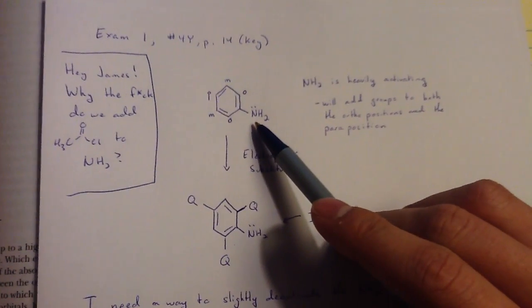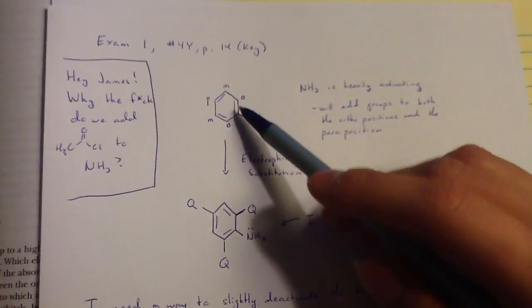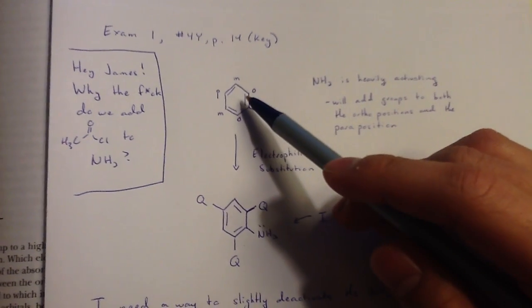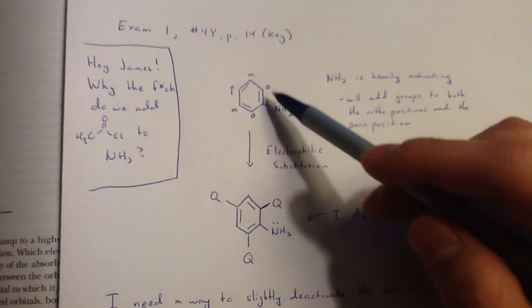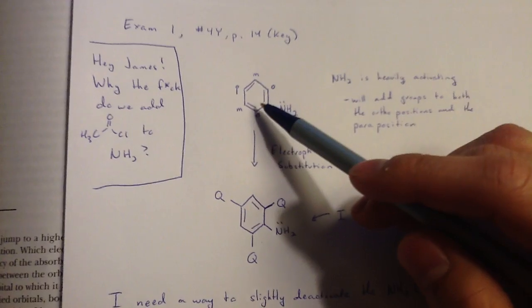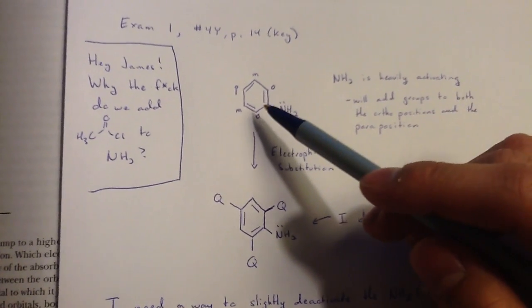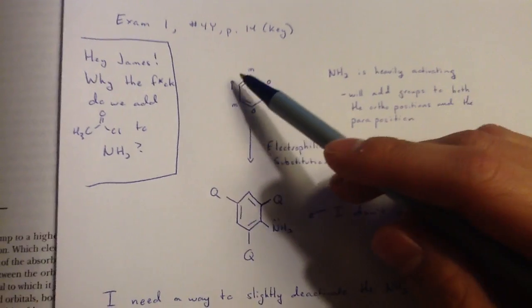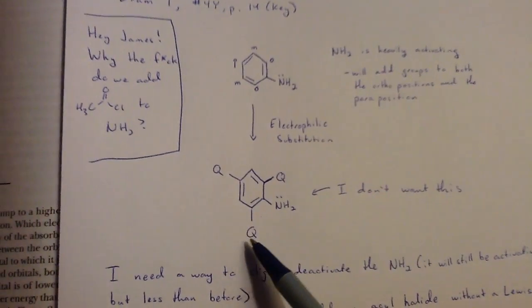First off, NH2 is extremely activating, in that if we were to actually do a second electrophilic substitution, because NH2 is ortho-para directing and it's crazy activating, there's no real way to stop that reaction. So it would end up with groups on the ortho and the para positions and end up with something like this.